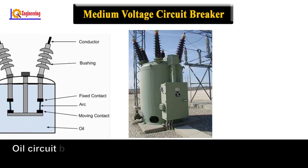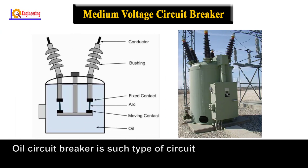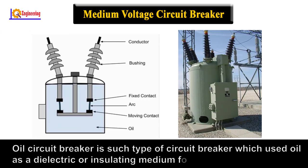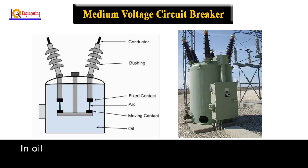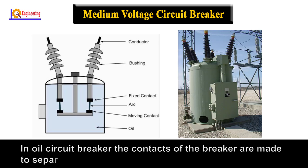Oil circuit breaker. An oil circuit breaker is a type of circuit breaker which uses oil as a dielectric or insulating medium for arc extinction. In an oil circuit breaker, the contacts of the breaker are made to separate within an insulating oil.